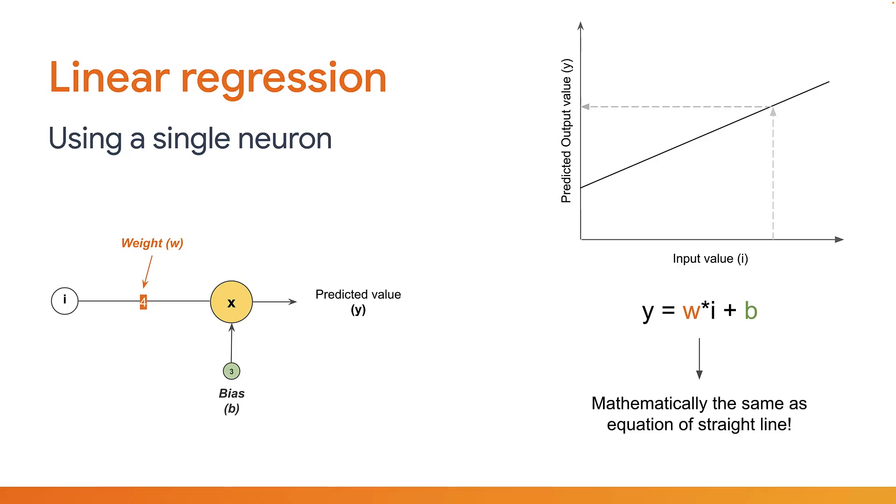Now, looking at this new simplified neuron, you can see that the output prediction, let's call it y, is simply the weight multiplied by the input with a bias added to that. This can be expressed as y equals w times i plus b, which is mathematically the same as the equation of a straight line. All you need to do now is to find the values for the weight and the bias respectively, that fits the training data best in order to predict values.